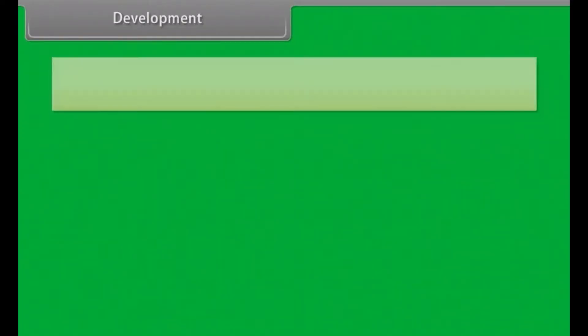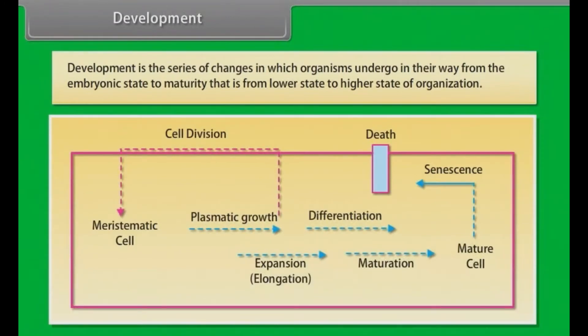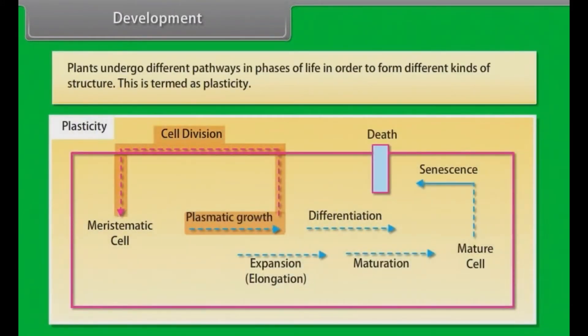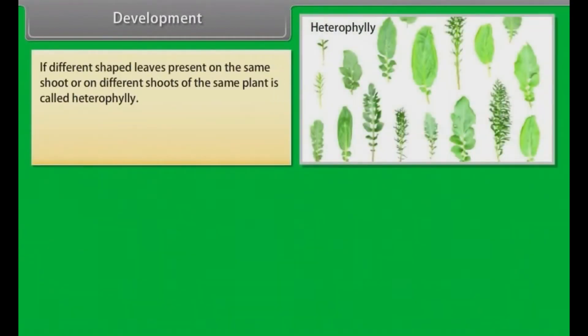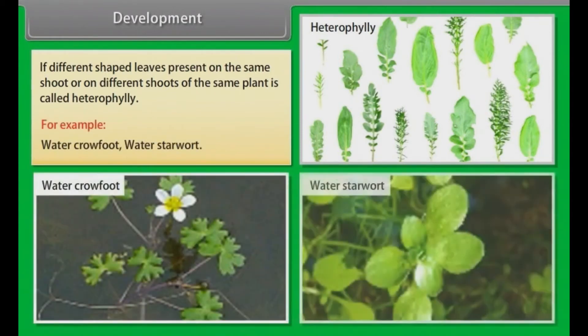Development is the series of the changes in which organisms undergo in their way from the embryonic state to maturity, that is, from lower state to higher state of organization. Plants undergo different pathways and phases of life in order to form different kinds of structure. This is termed as plasticity. If different shape leaves present on the same shoot or on different shoots of the same plant, it is called heterophylly. For example, water crowfoot, water starwort.